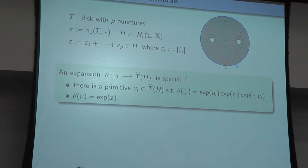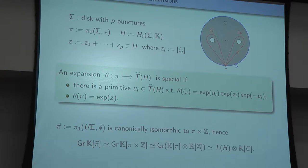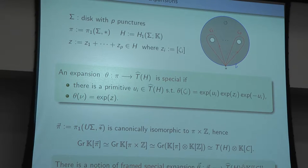To consider the μ̃ map we need the fundamental group of the unit tangent bundle. In the case of a disk, this is just the free product of π with ℤ, because we can fix a non-singular vector field and compute the winding number with respect to it. There is a sequence of canonical isomorphisms, and there is a framed version of spatial expansions. In this case, it consists in embedding the group π̃ into the completed tensor product — the degree completion of T(H) tensored with formal power series in one formal variable c.